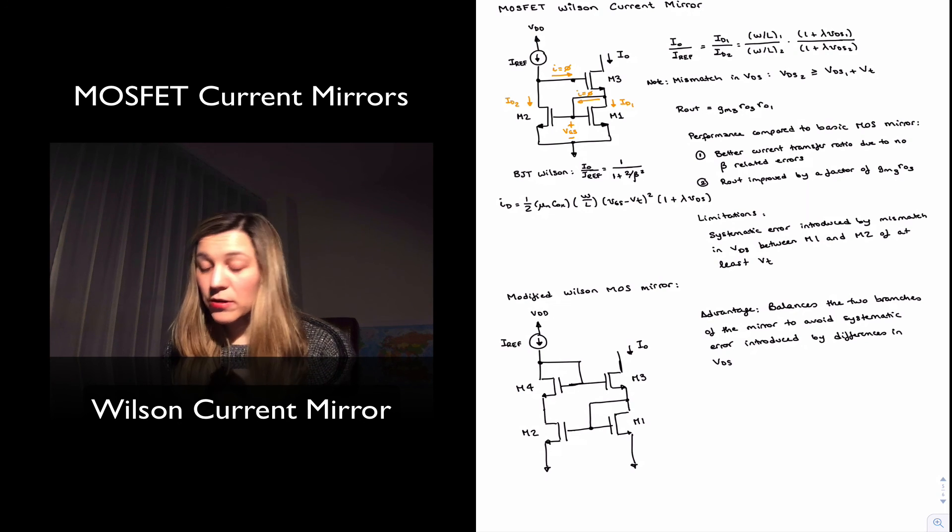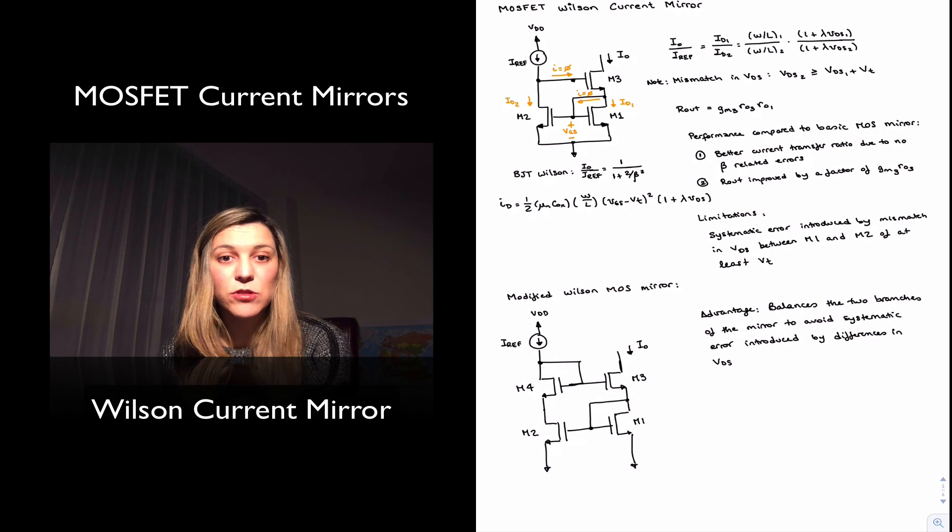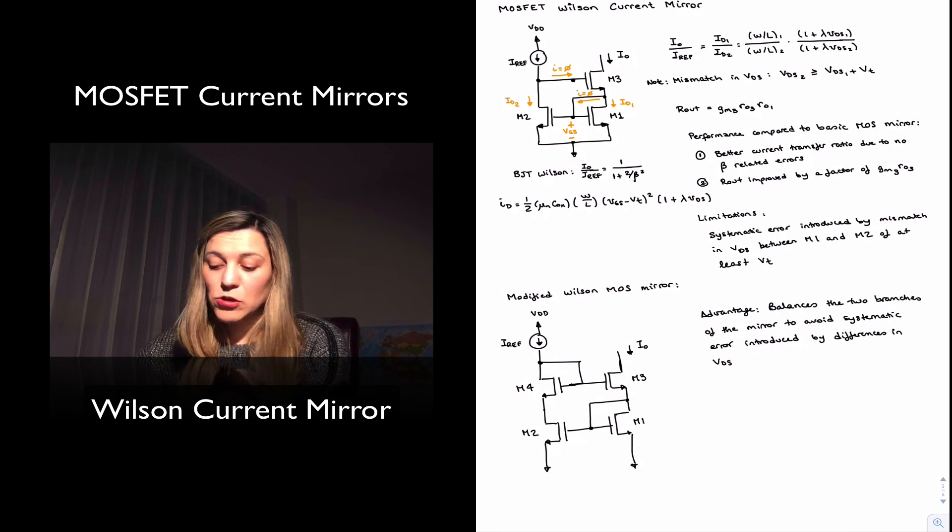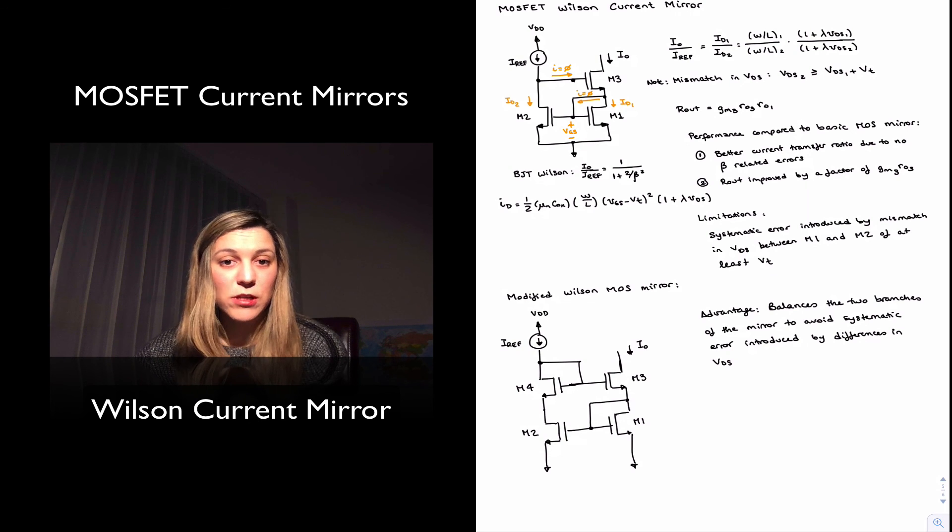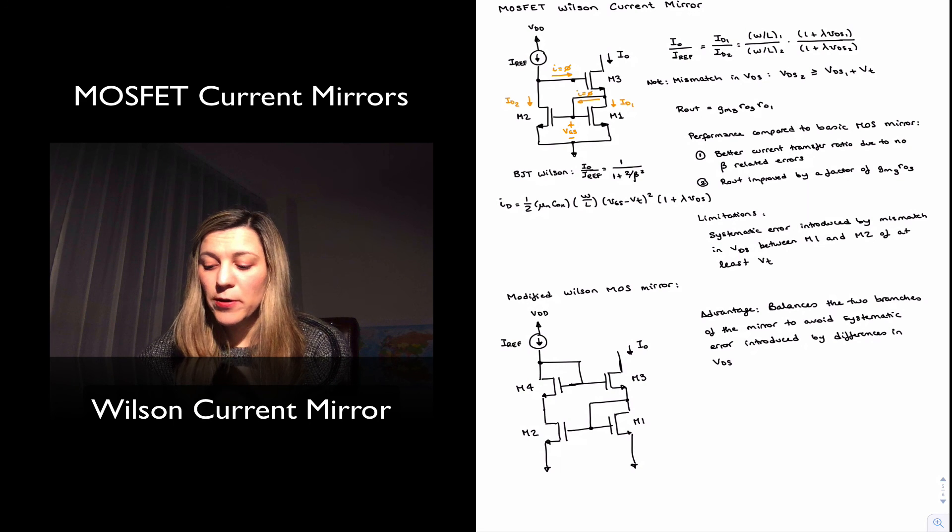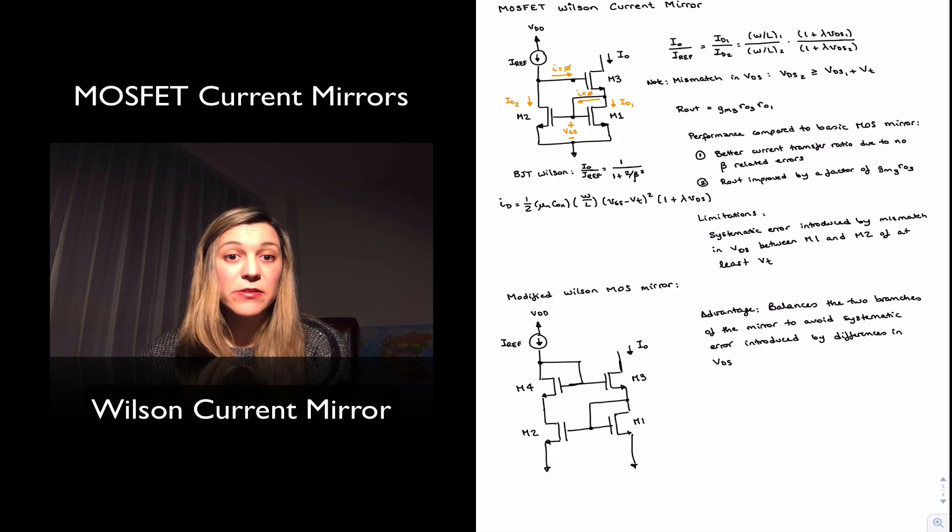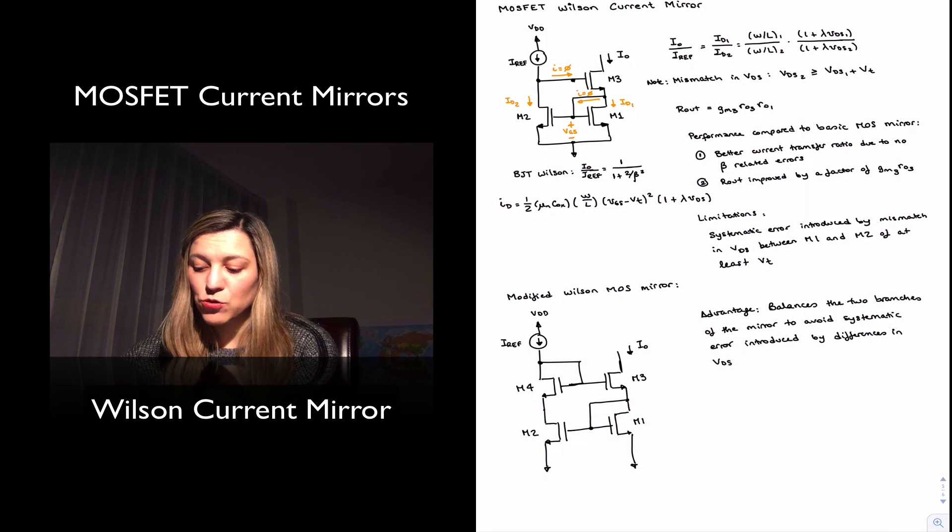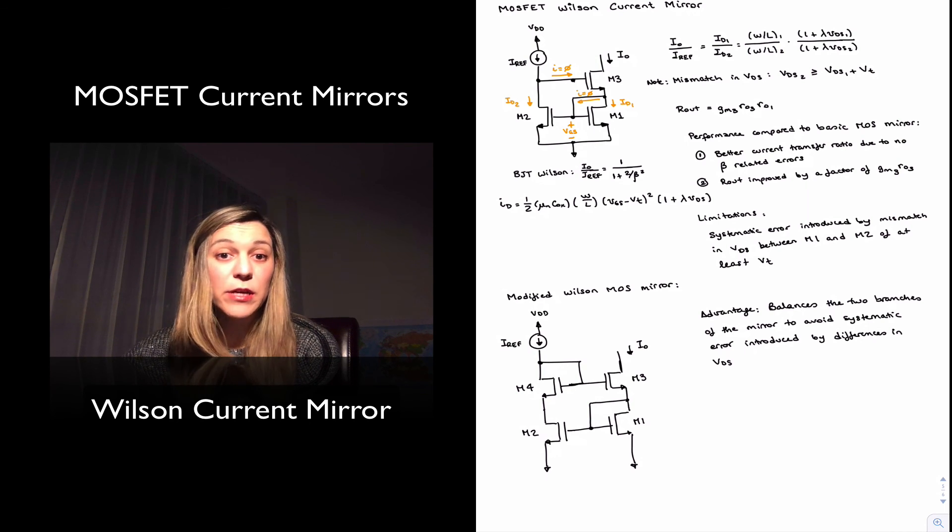One of the other limitations, if you will, or disadvantages with respect to the standard, the basic MOSFET mirror, obviously is that now you have two transistors in the path to the output, and you need to keep both of them in saturation. And so it basically limits your range of output voltages, or the compliance of your current source, in that the minimum voltage that you need to have at your output now for the circuit to be operating properly, is two VOVs, two overdrive voltages, because you need both M1 and M3 to be in saturation.